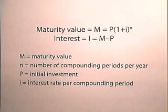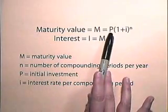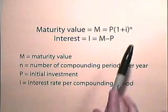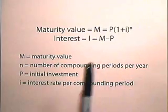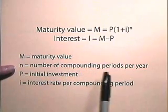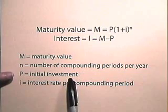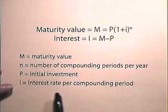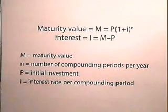Now let's use the formula to compute compound interest and compound amount. The formula states that the maturity value M is equal to the principal P times (1 + i)^n, and the interest equals the maturity value minus the principal. M is the maturity value, n is the number of compounding periods per year, P is your principal or initial investment, and the small i is the interest rate per compounding period.